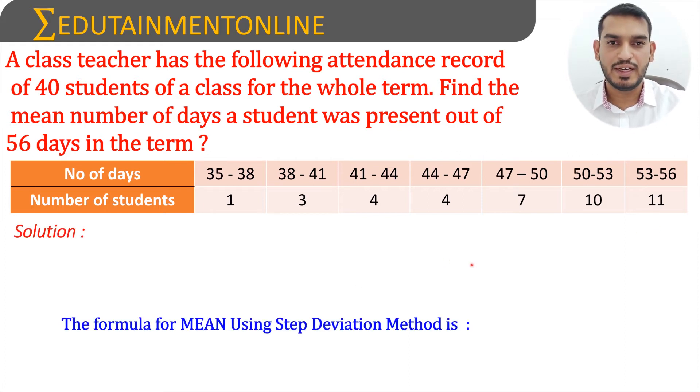So we will find using the step deviation method. The formula for mean using step deviation method is a plus h into sigma of fi ui by sigma of fi.